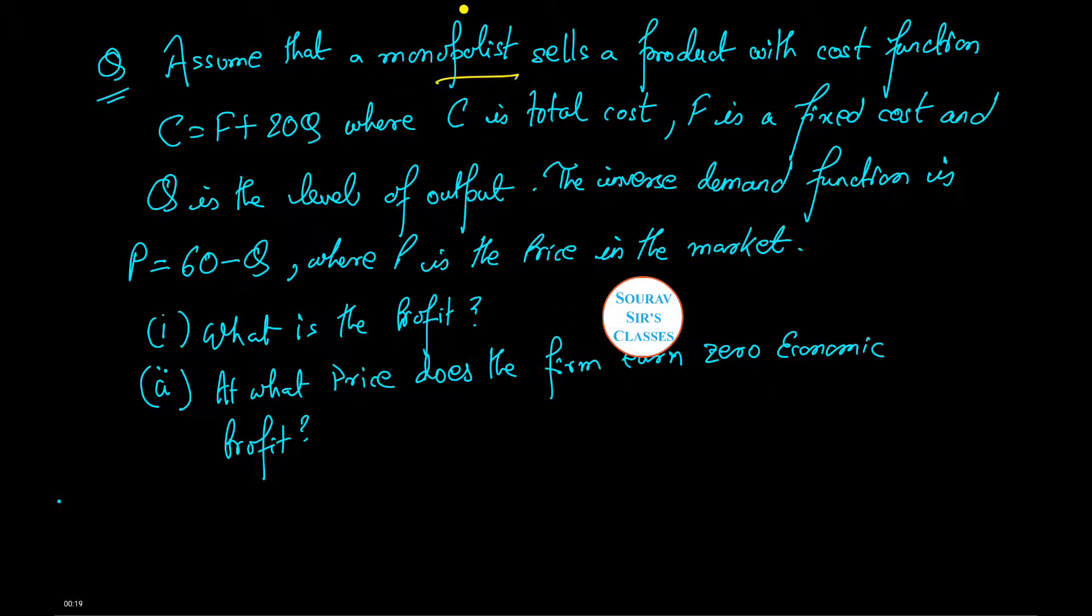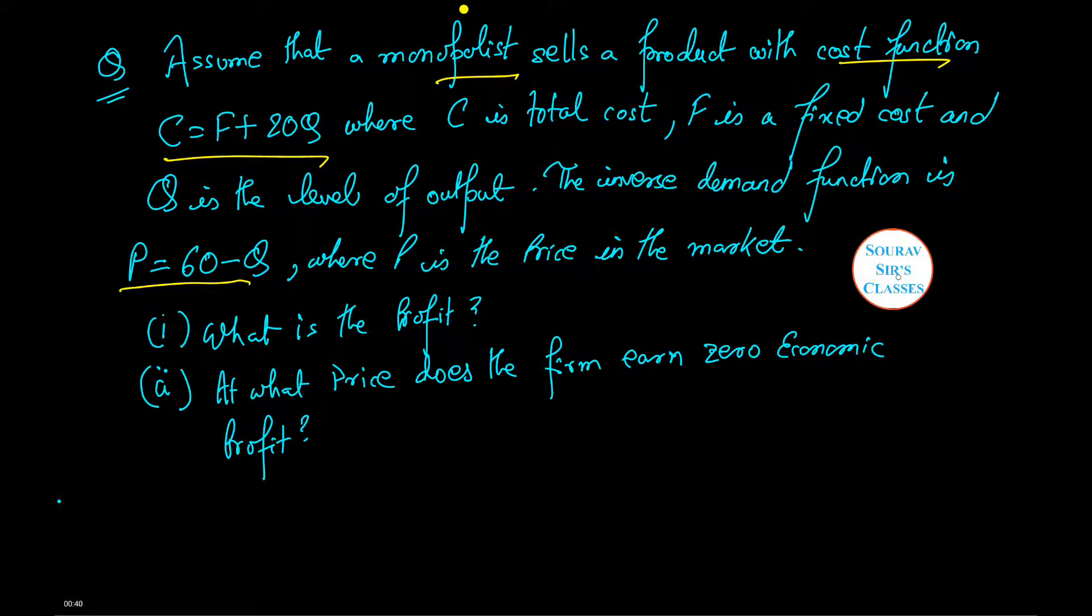Assume that a monopolist sells a product with cost function C equals F plus 20Q, where C is total cost, F is a fixed cost, and Q is the level of output. We are also given an inverse demand function P equals 60 minus Q, where P is the price in the market. We need to find out the firm's profit and also at which price the firm earns a zero economic profit.